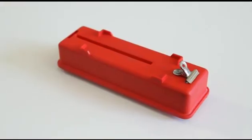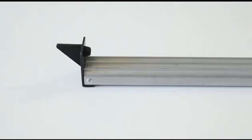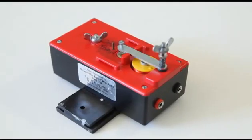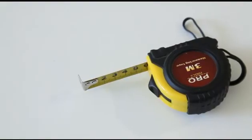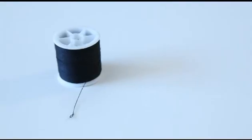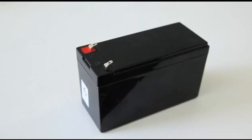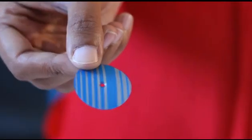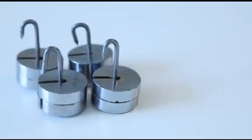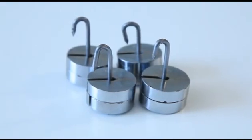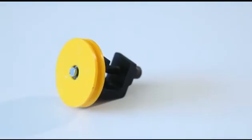To do this experiment we will need a dynamics trolley, a rail track, a ticker timer, ticker tape, a measuring tape, cotton thread, 12 volt battery, carbon paper, set of mass pieces which are 100 grams each and a pulley.